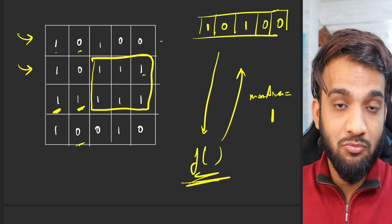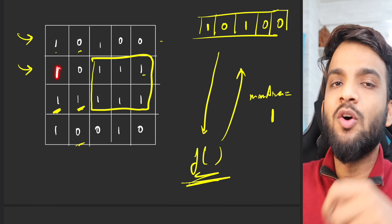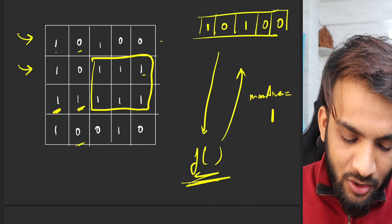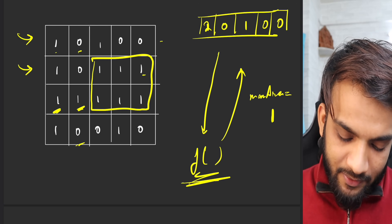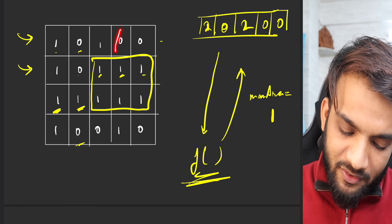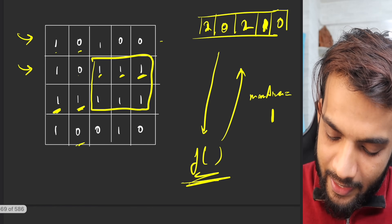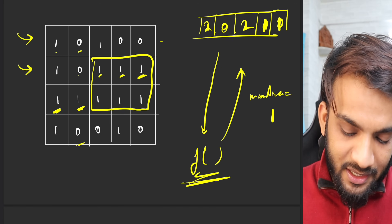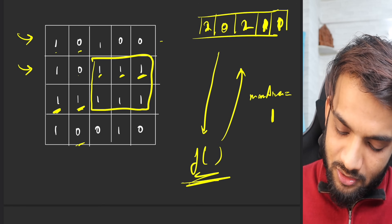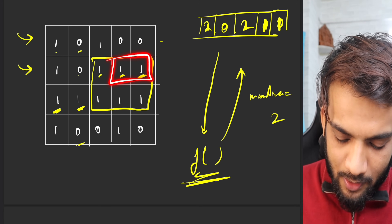Moving to the next row: if the previous height was one and there's another one, the histogram height increases. If there's a zero, height stays zero. If there's a one where there was previously a zero, height goes to one. So the updated heights become 2, 0, 2, 1, 1, and passing this to the function gives maximum area of two.